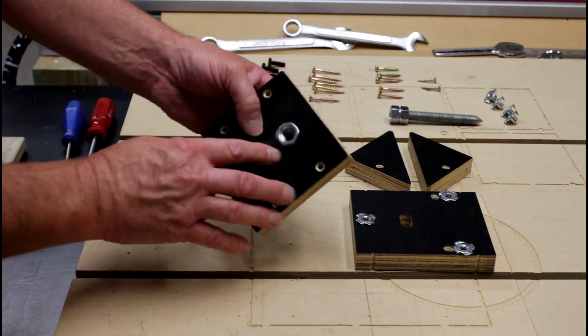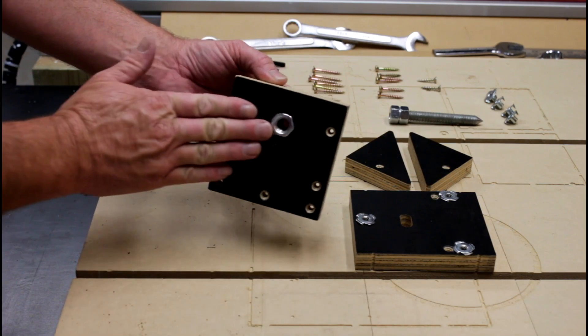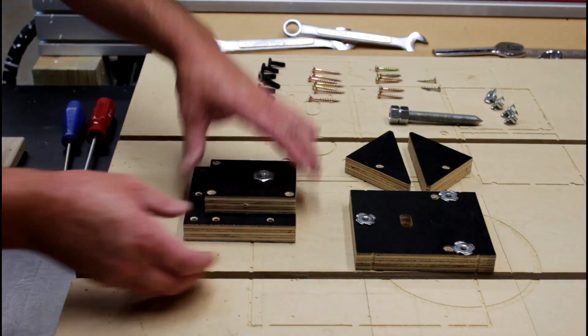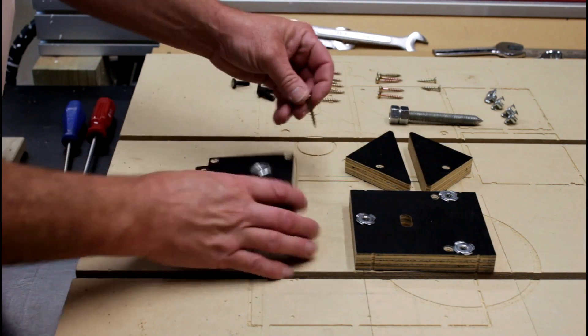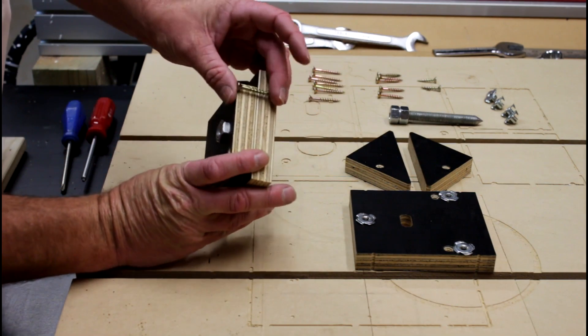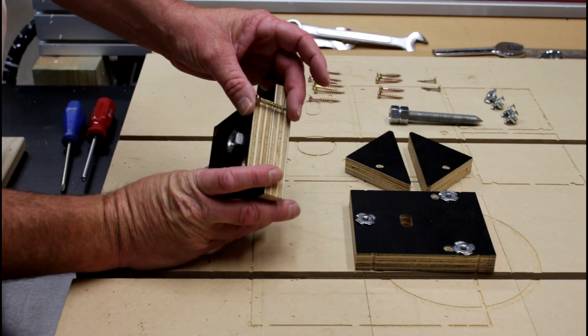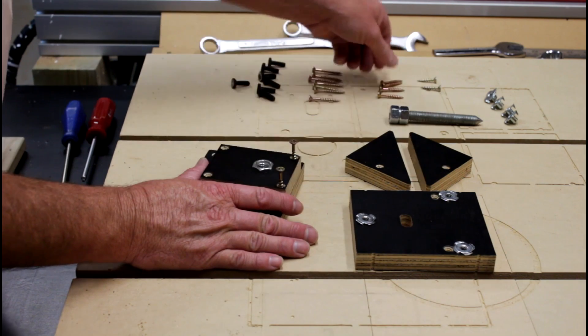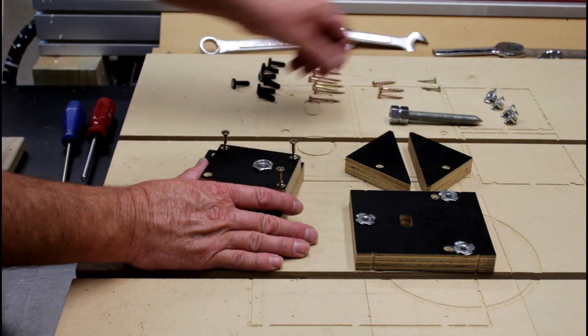Now that the nut is in here and flush to this side here, we can now put these four screws in. Now just be careful when you pick your screw length, you need to make sure it doesn't come out the other side. I'm using one and a quarter inch screws here.